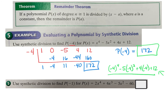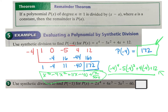Synthetic division is easier than substitution when dealing with high-degree polynomials with many exponents. If asked to evaluate using synthetic division, your only answer is the remainder — 172 in this case. If you give the entire polynomial expression as your answer, that is wrong. When asked to evaluate, all I'm looking for is the remainder.